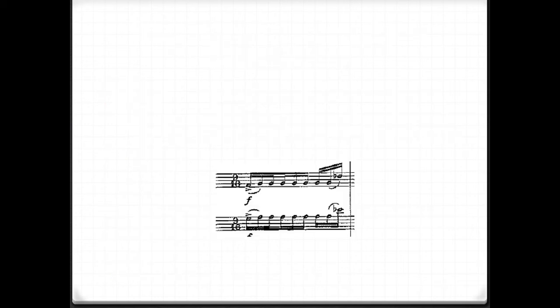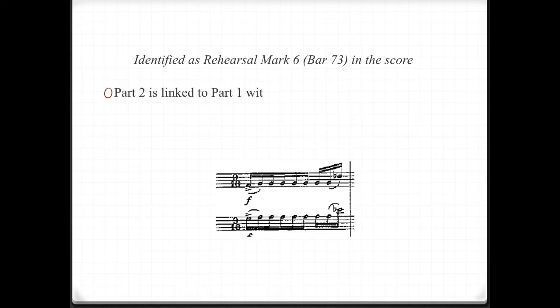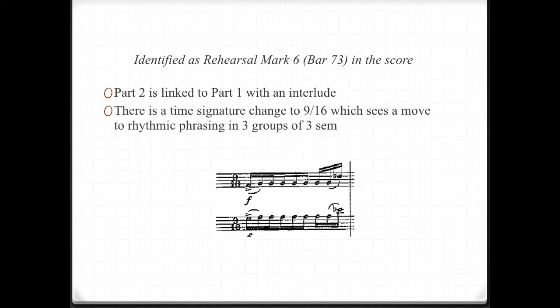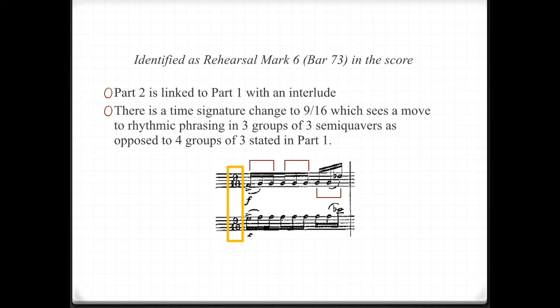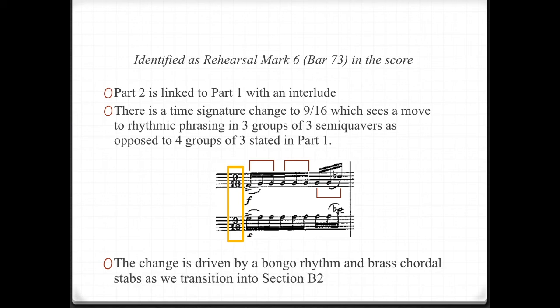The transition is identified as rehearsal mark 6 or bar 73 in the score. Part 2 is linked to part 1 with an interlude. There is a time signature change to 9/16, which sees a move to rhythmic phrasing of three groups of three semiquavers, as opposed to four groups of three stated in part B1. The change is driven by the bongo rhythm and brass chordal stabs as we transition into section B2.